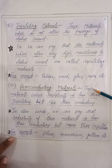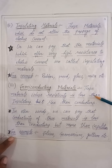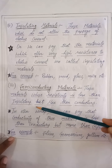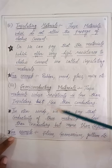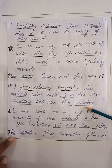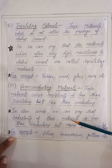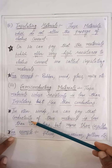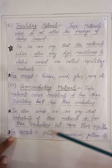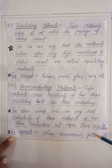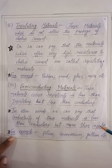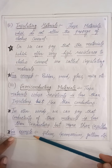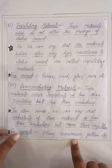Semiconducting materials. Those materials whose resistivity is less than insulators but more than conductors. Or in other words, whose conductivity is less than conductors but more than insulators. For example, silicon, germanium, gallium, etc.